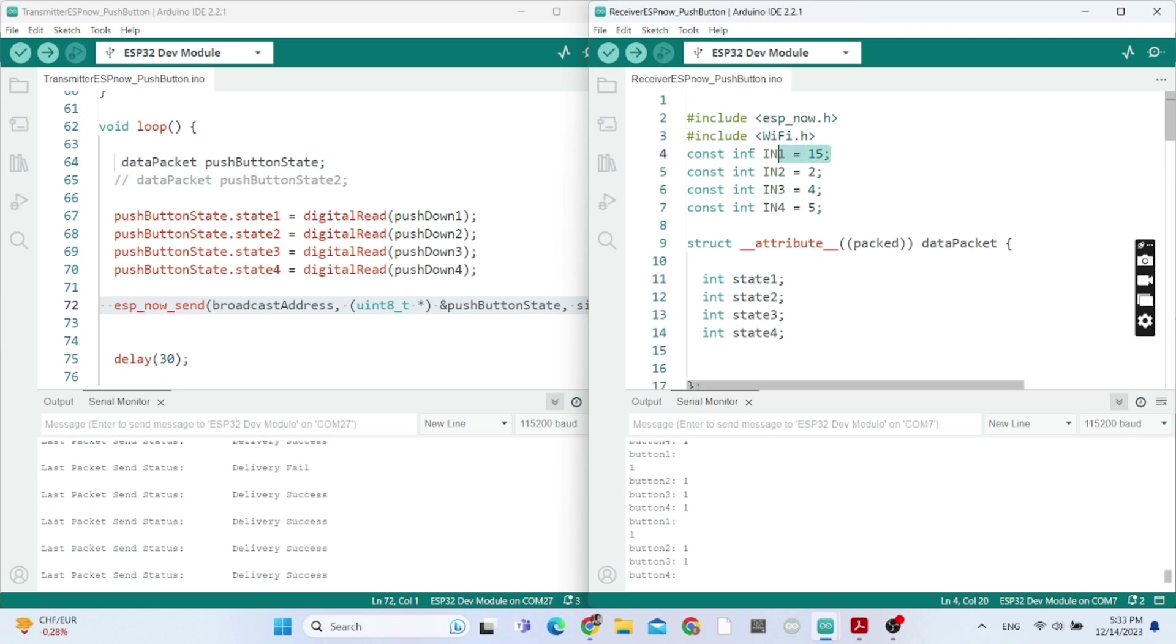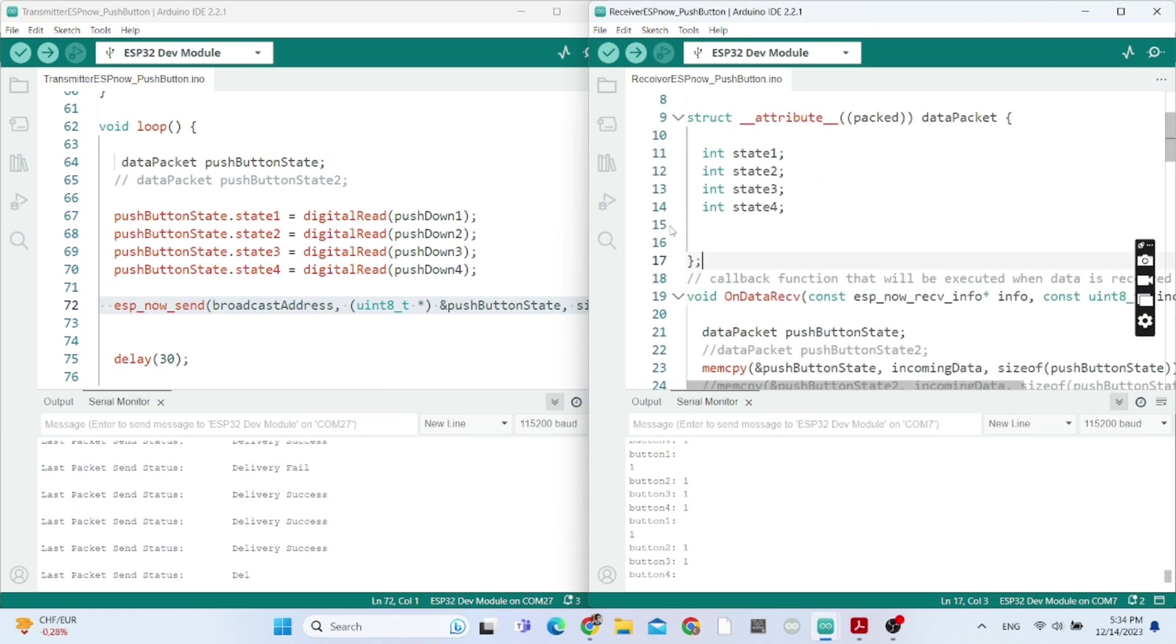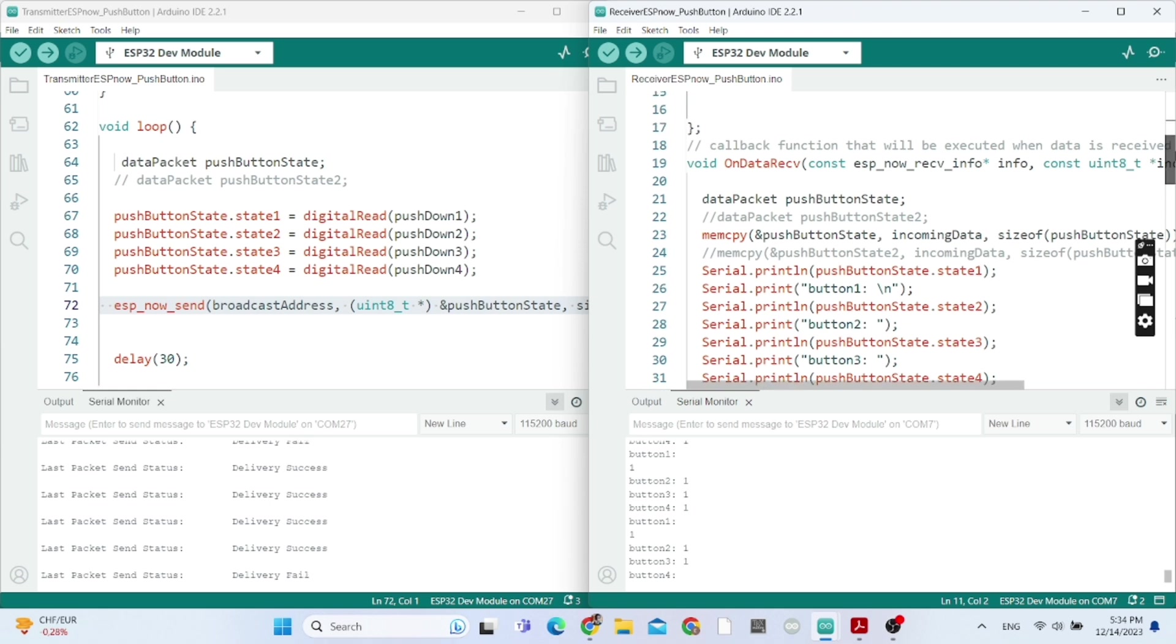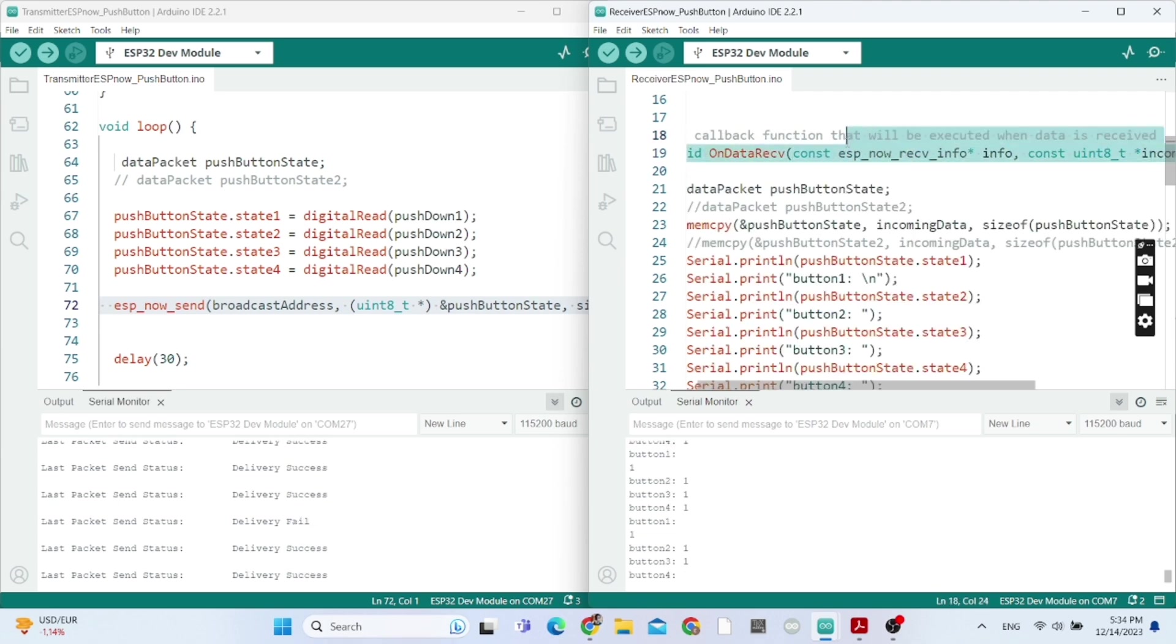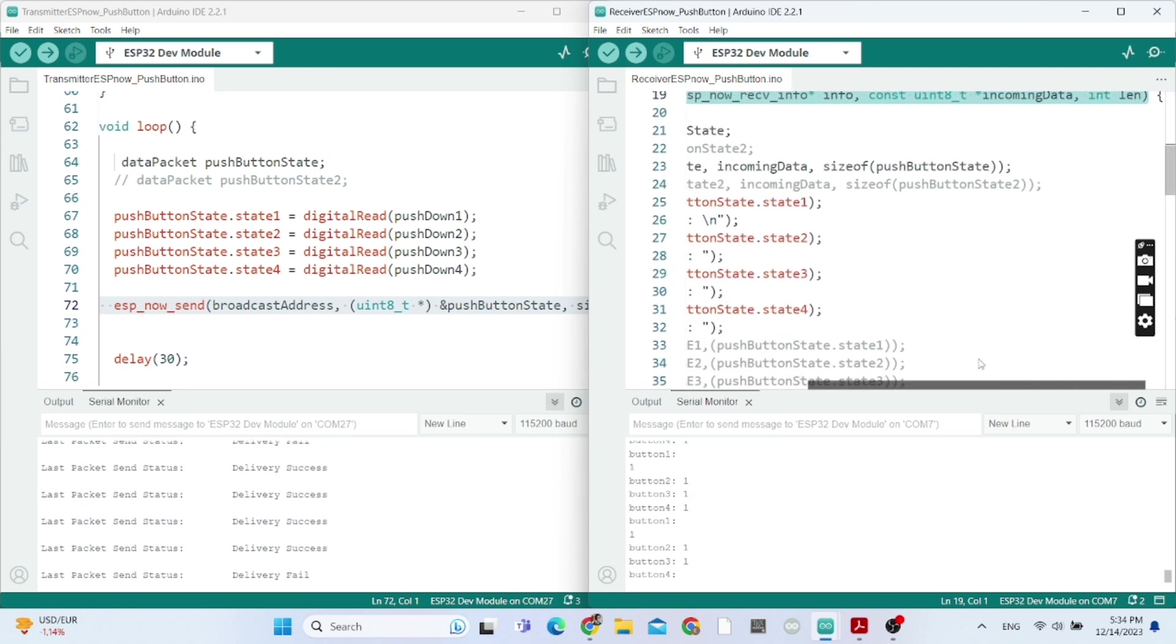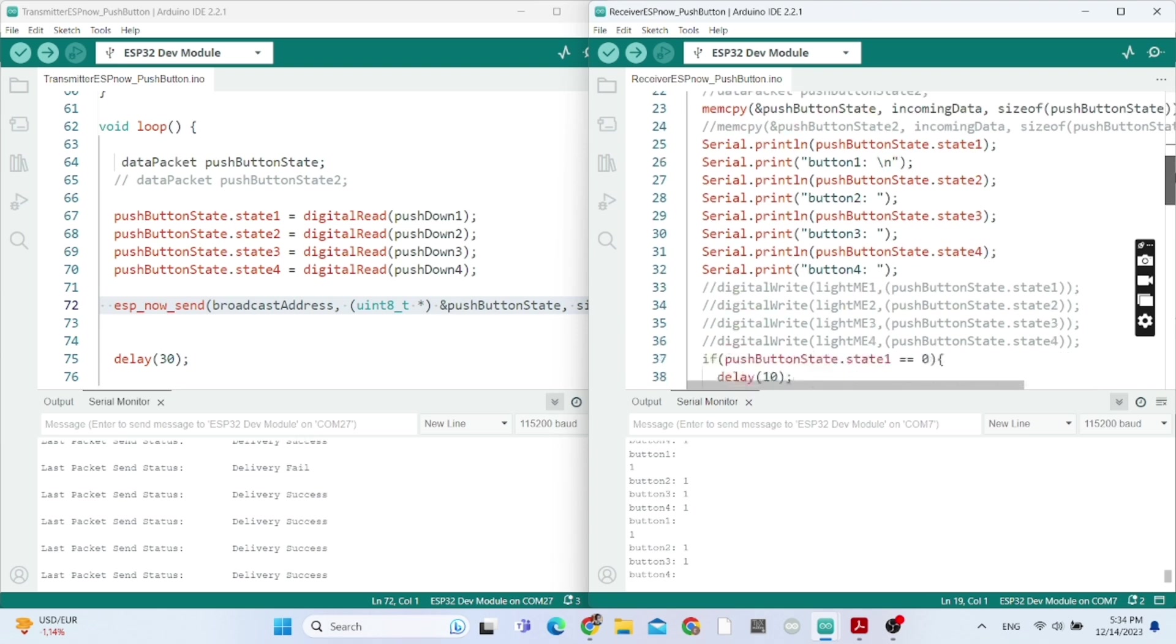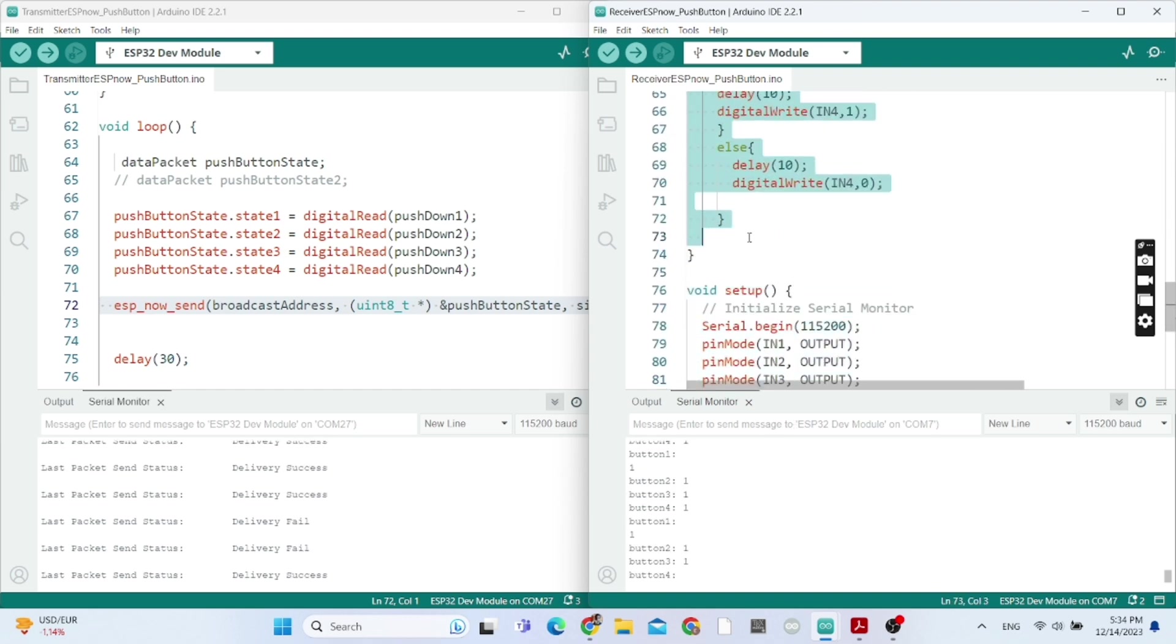Now on my right side is the receiver code. IN1 is GPIO 15, IN2 is GPIO 2, IN3 is GPIO 4, and so on. These are the states of the push buttons, the four push buttons. That's inside of the on data receive function.